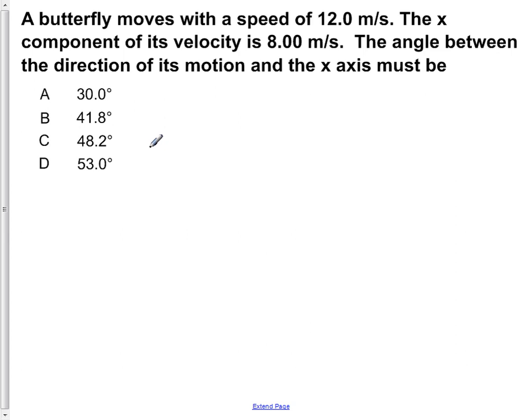A butterfly moves with the speed of 12 meters per second. The x component of its velocity is 8 meters per second. The angle between the direction of its motion and the x-axis must be.